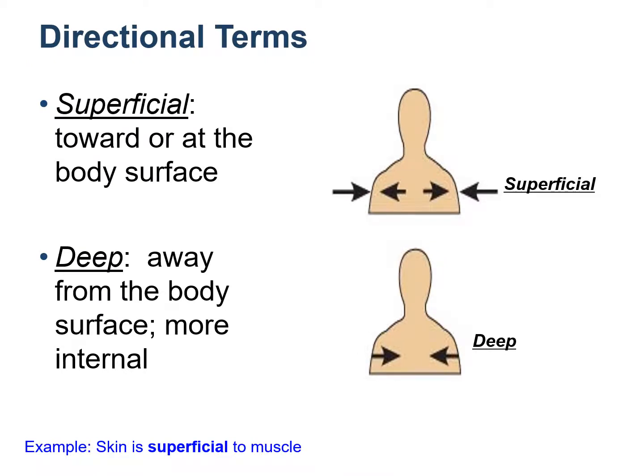The next set is superficial versus deep. Superficial means towards the external surface of the body, while deep is something that is buried deep inside, internal. The example is skin is superficial to the muscle, because the skin is superficial while the muscle is deep inside. Or in other words, the muscle is deep to the skin.